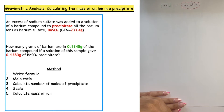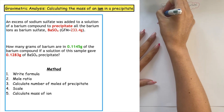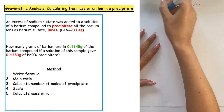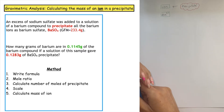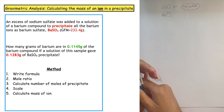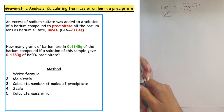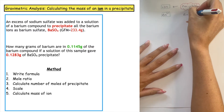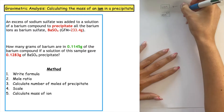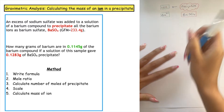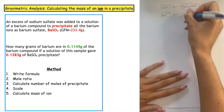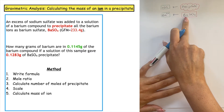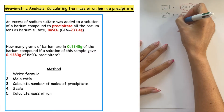In this first example we have been asked to calculate how many grams of barium — the ion Ba²⁺ — are found in the barium compound, if a solution of this sample gave 0.1283 grams of the barium sulphate precipitate. The first step we always do is write out the formula for both the ion we are investigating and the formula for the precipitate. We want to see how many bariums are found in the barium sulphate. From the formula there is only one barium, so the ratio is going to be one to one.